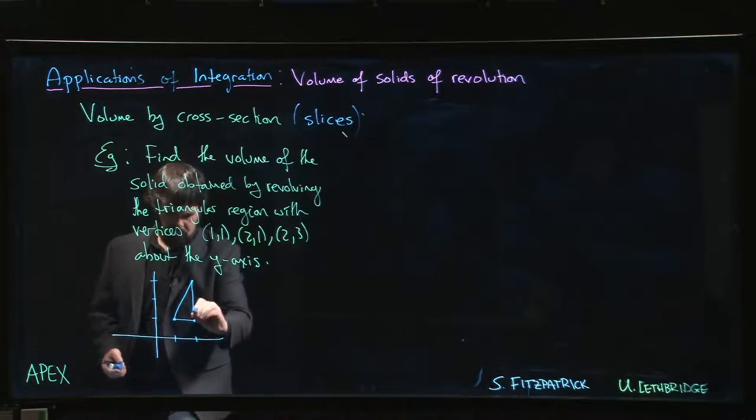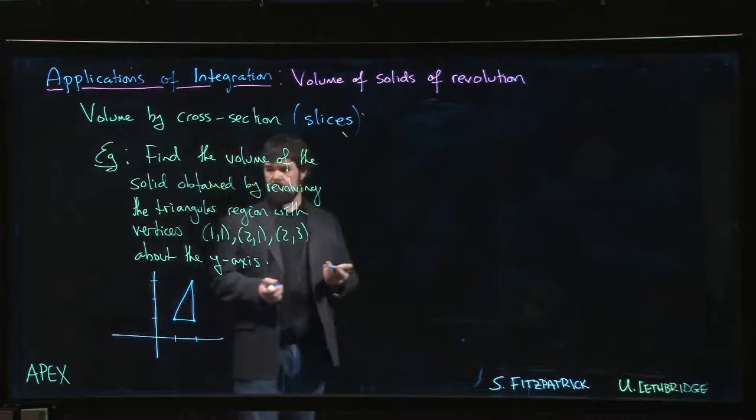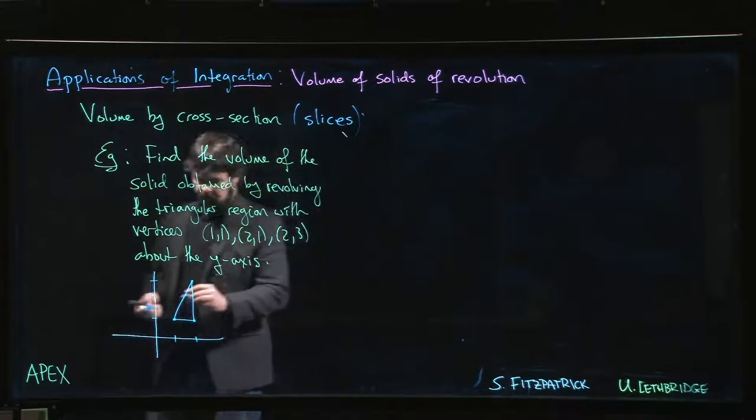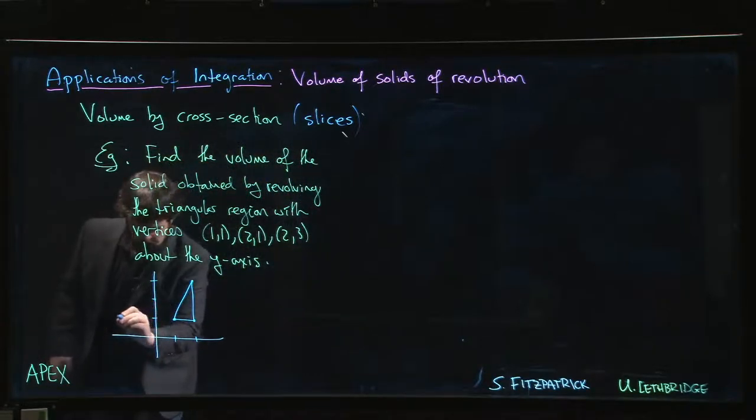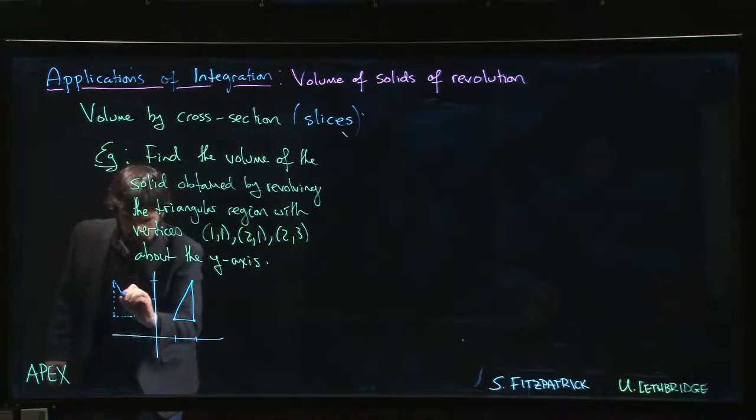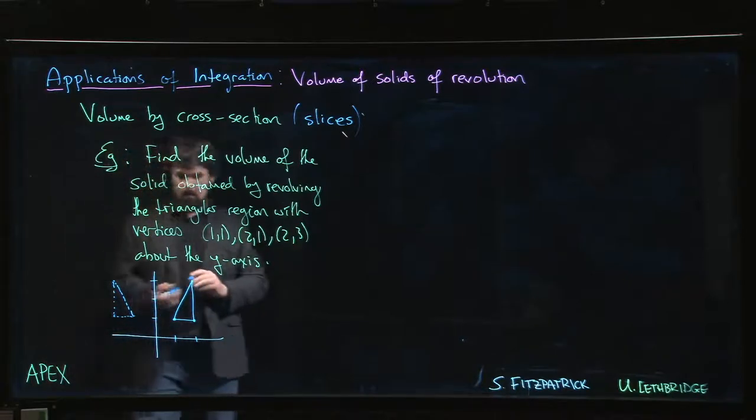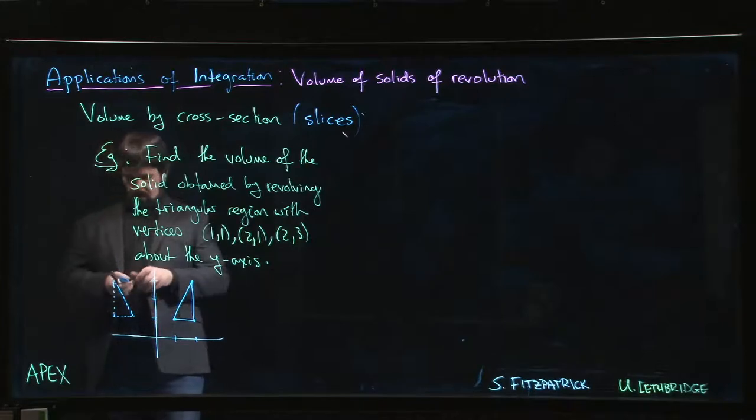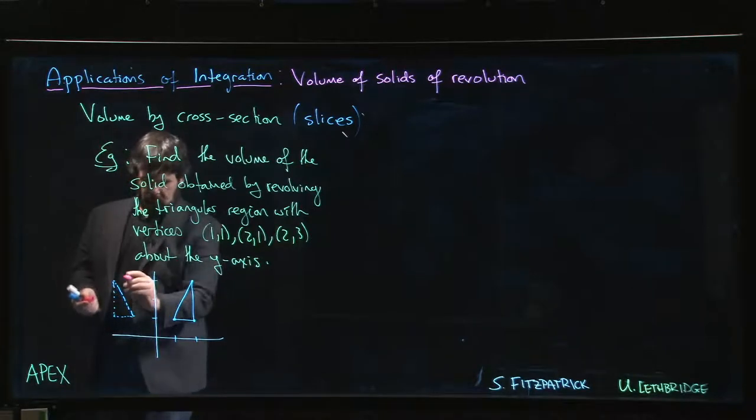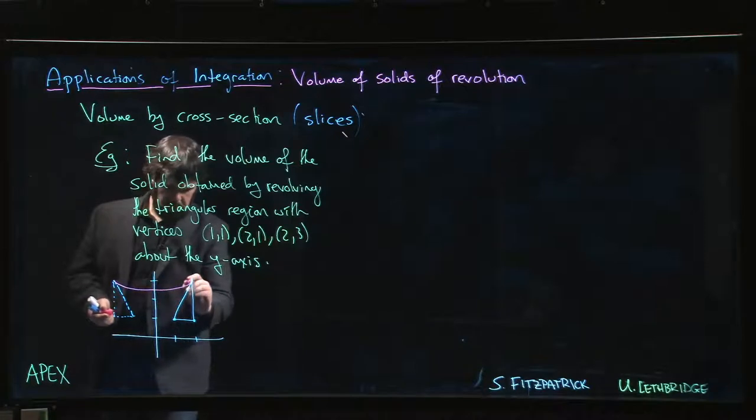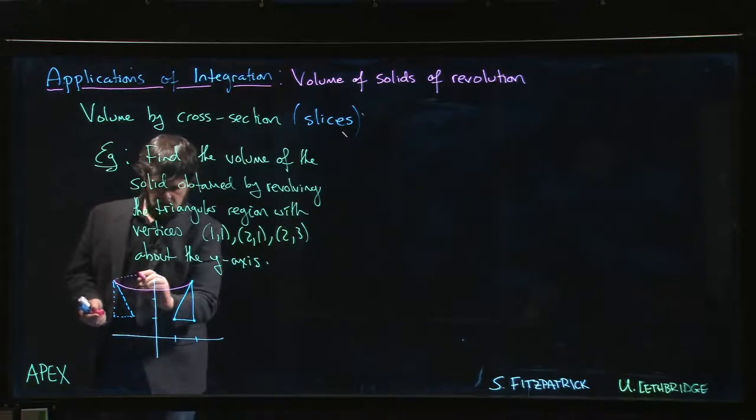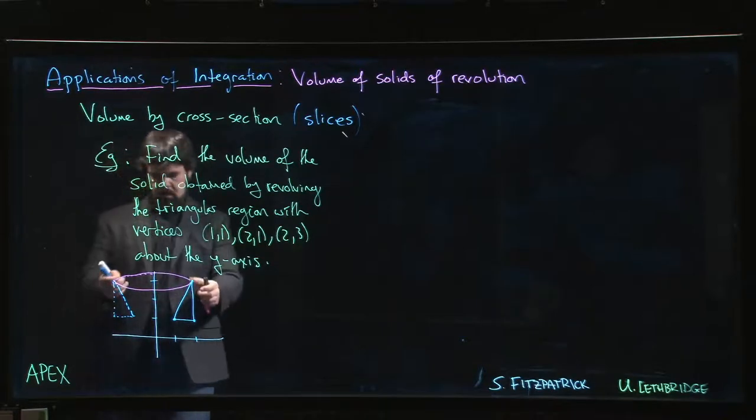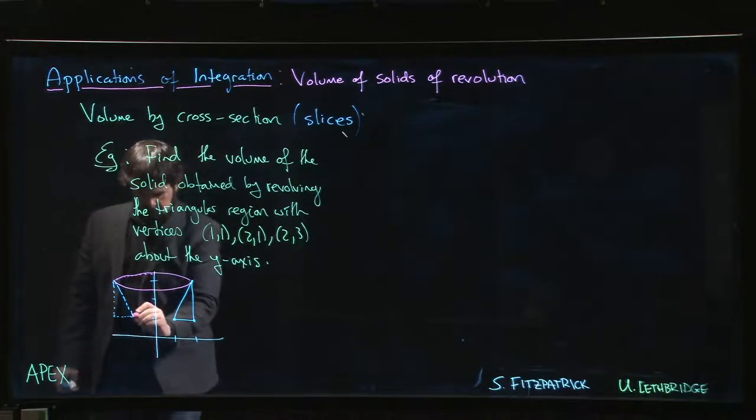There's our triangle. And we're going to revolve this thing about the y-axis, so there's going to be sort of the mirror of this thing over here as it comes around. And so we get this solid which kind of comes to just a rim at the top. It's just kind of like a bowl with an outside.